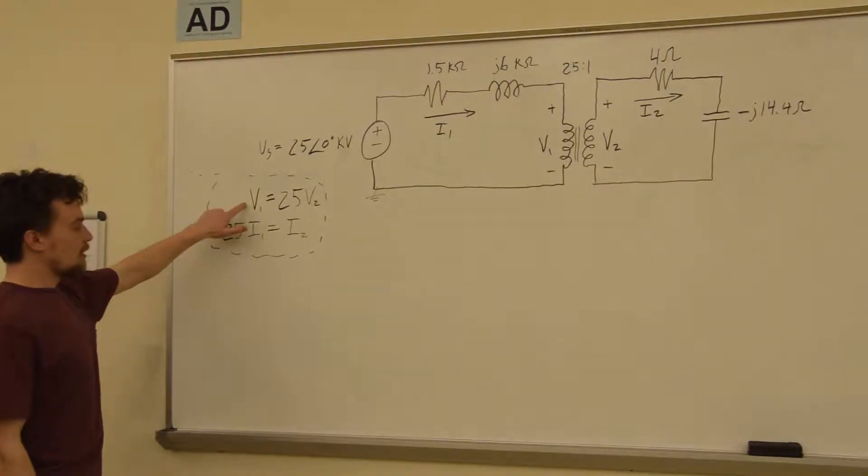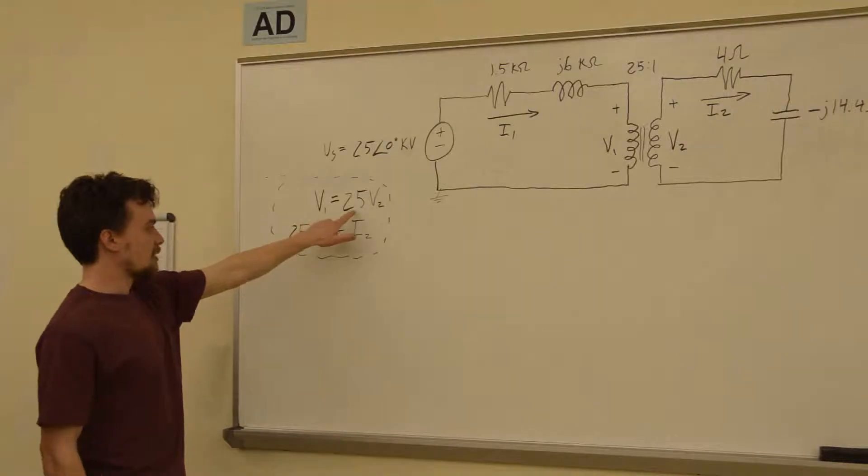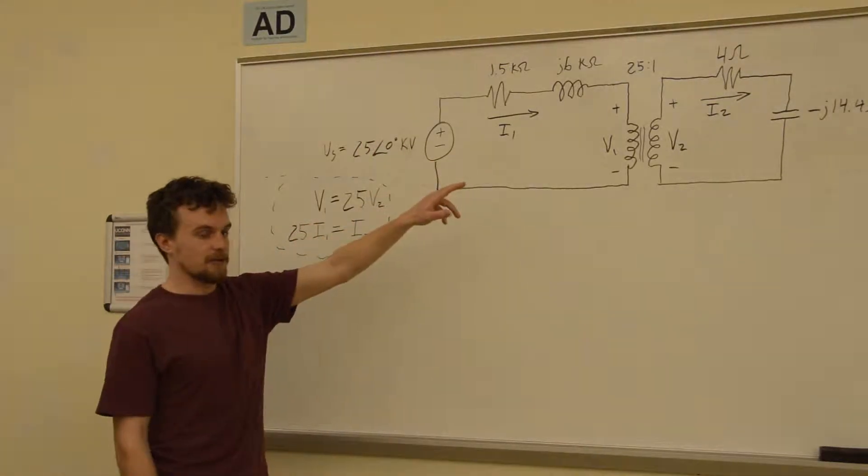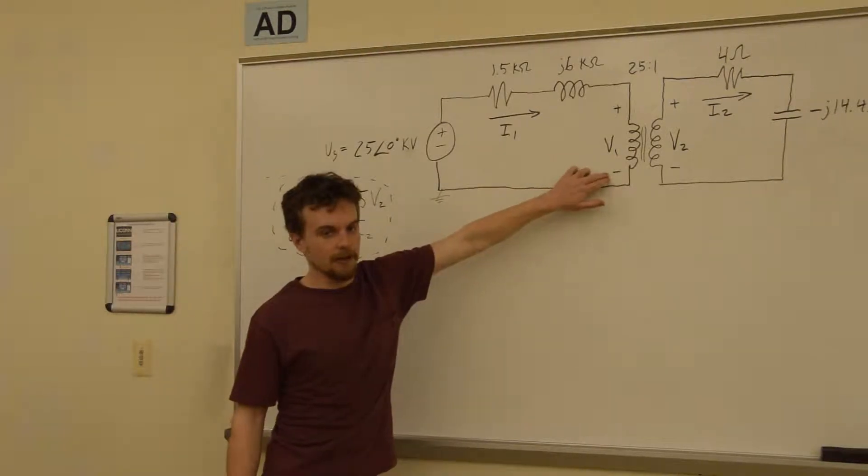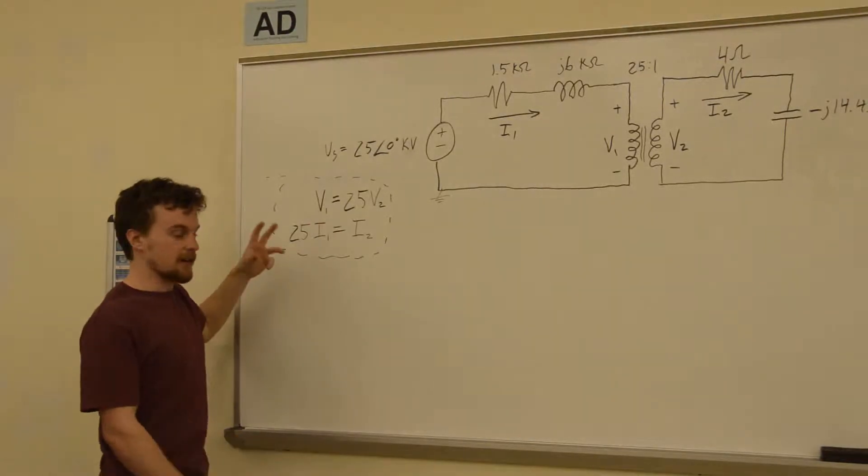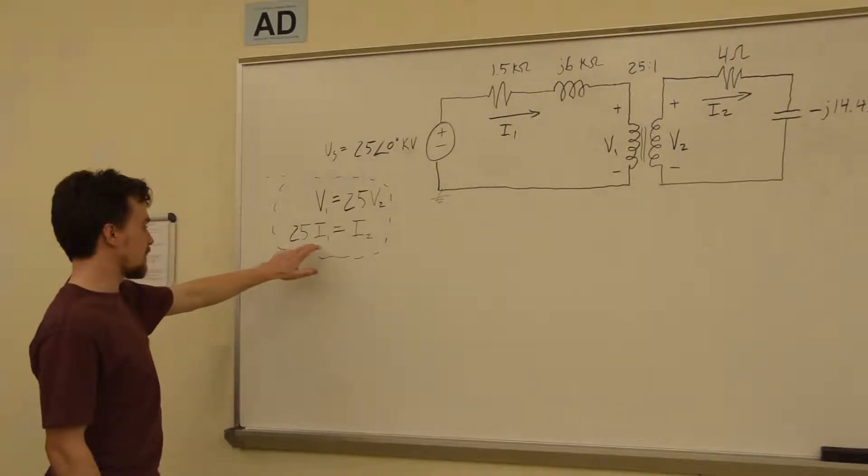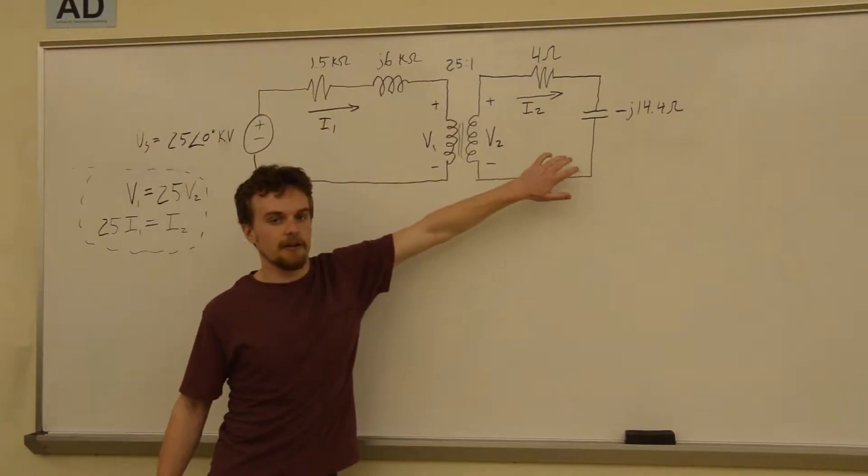The voltage V1 is equal to 25 times V2 on the other side, so you get a lot higher voltage over here. But the power I times V needs to be conserved, so that says that 25 times I1 is equal to I2, you get a lot higher current over here.